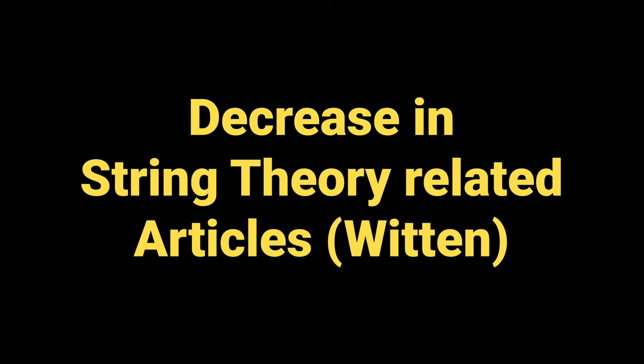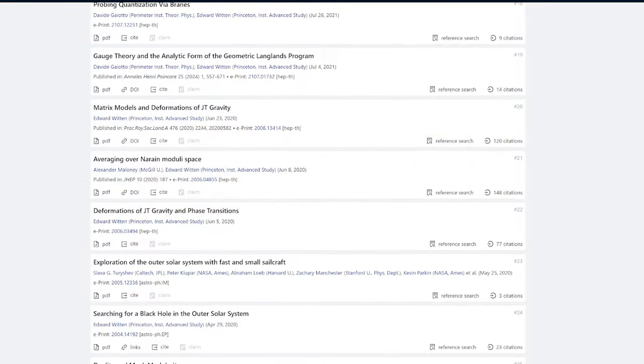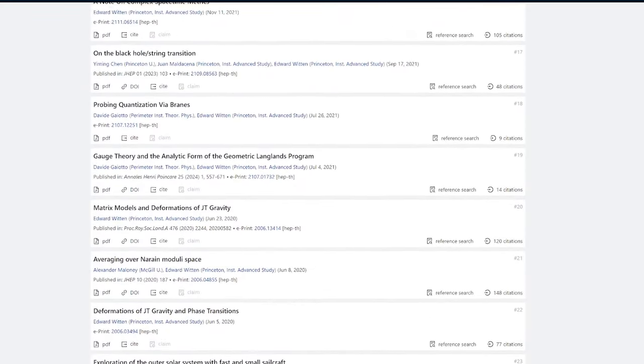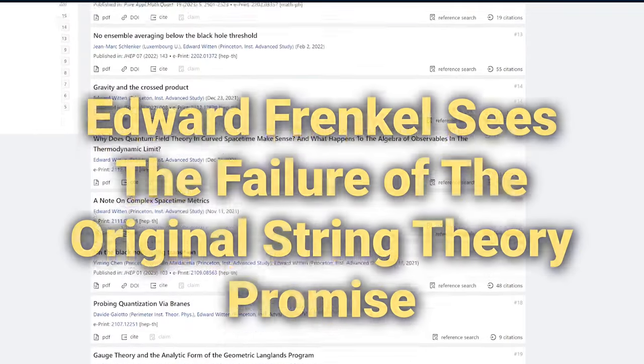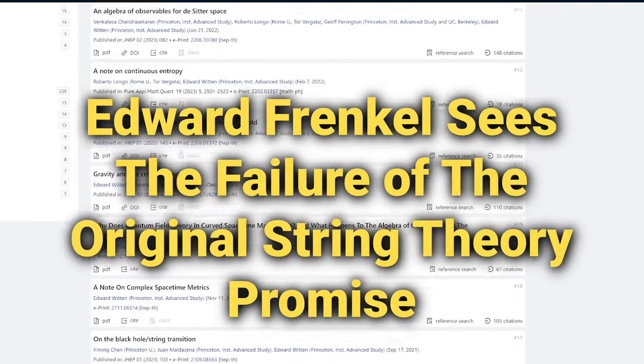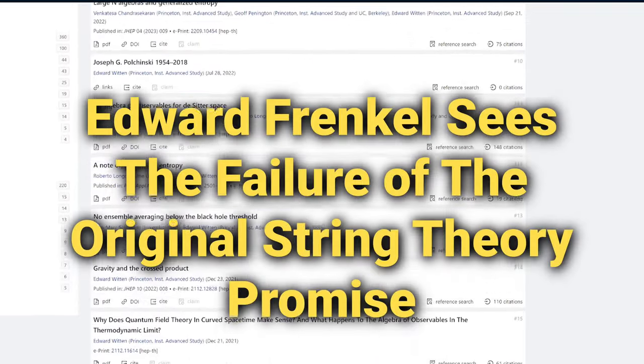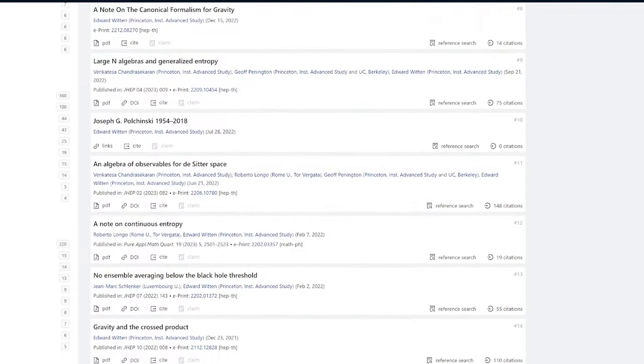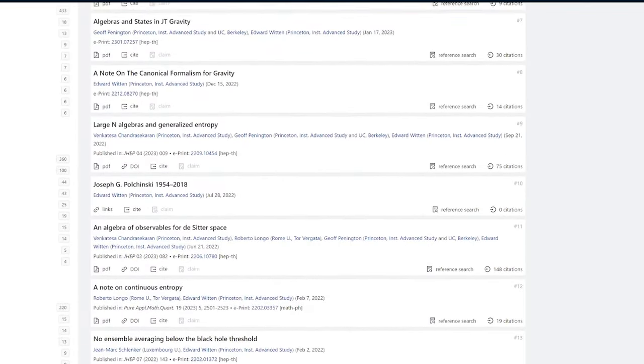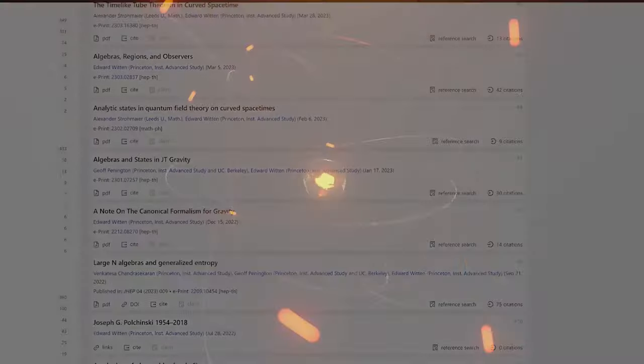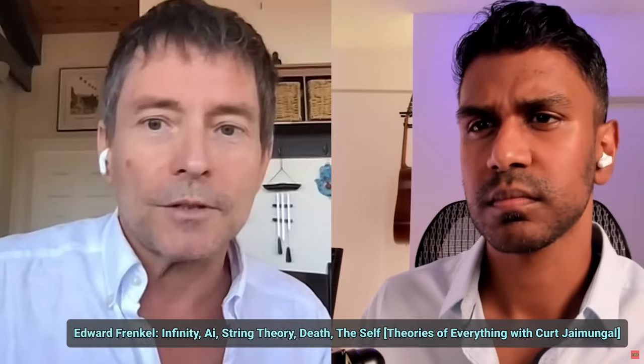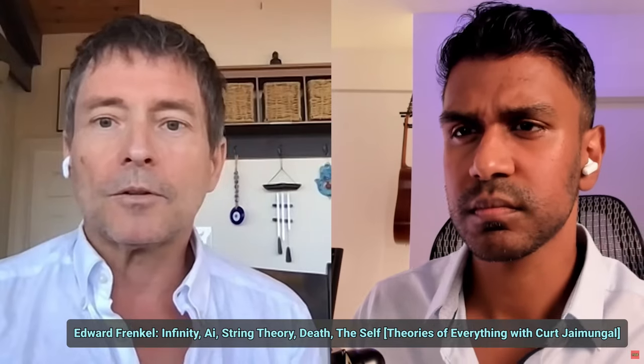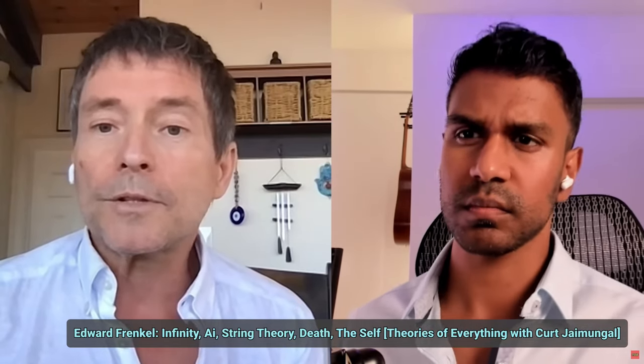Number six, another data point you can use as a rough heuristic is that browsing Ed Witten's publication record on Google Scholar, you can notice a decrease in string-related articles with time. Number seven, even Ed Witten's collaborator, Edward Frenkel, discusses the failure of the original promise of string theory to provide a unique theory of everything, going unacknowledged by string theory's creators over and over again. The podcast with Edward Frenkel is shown on screen here and in the description.